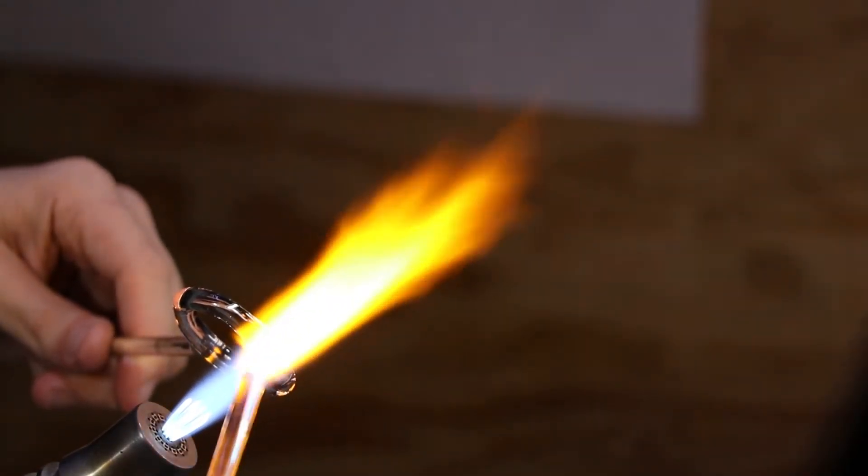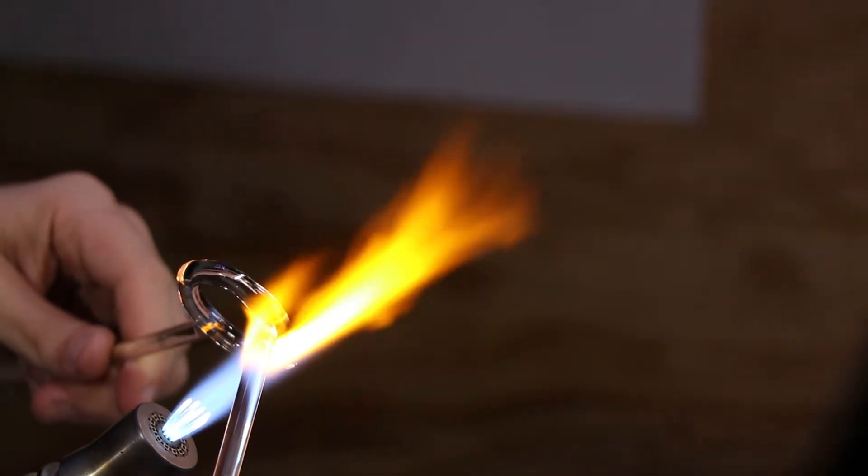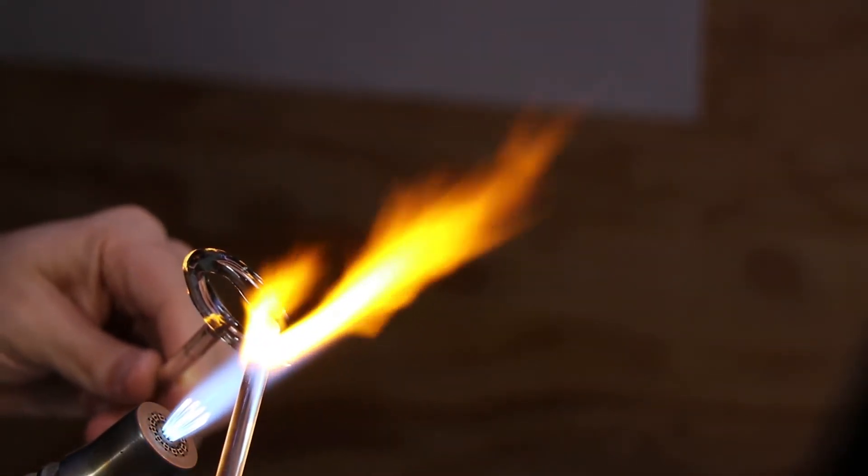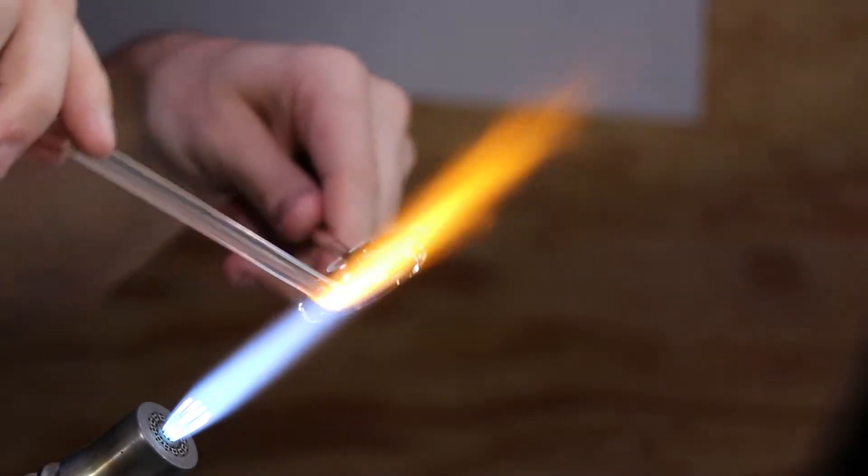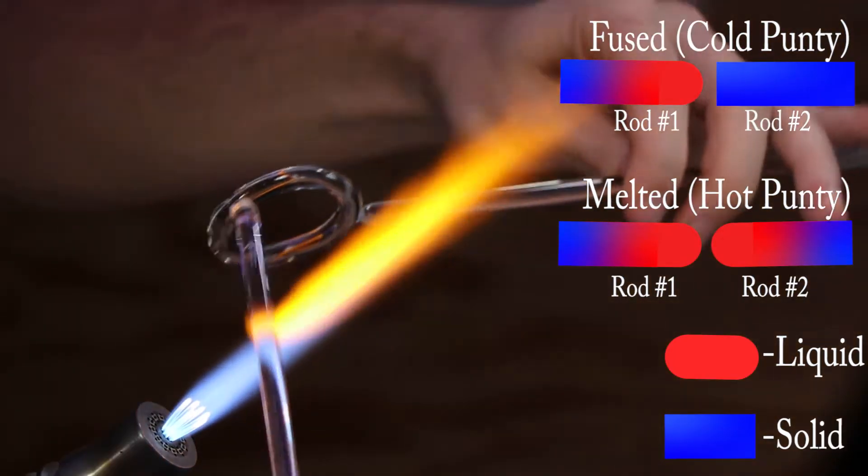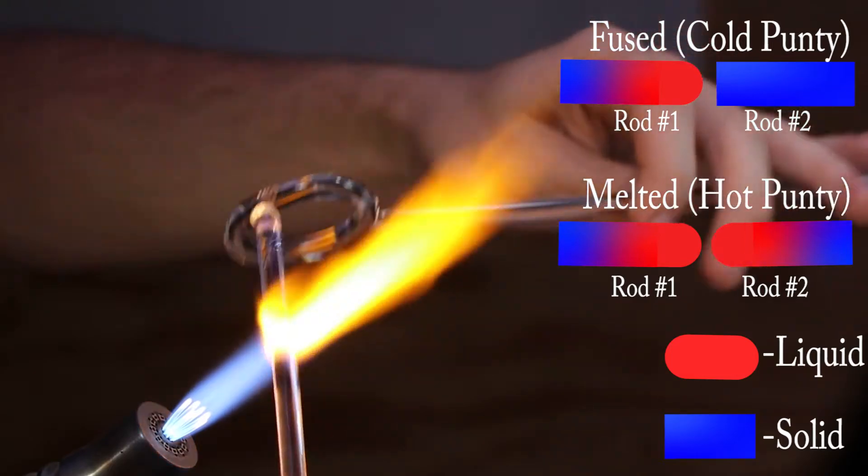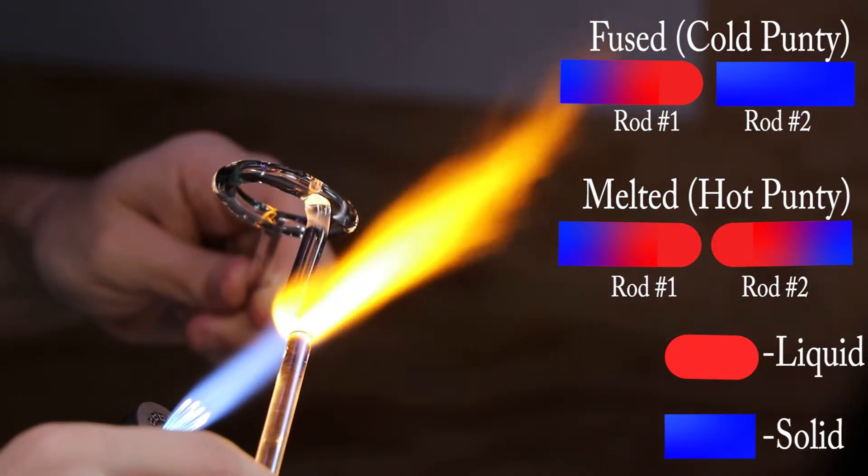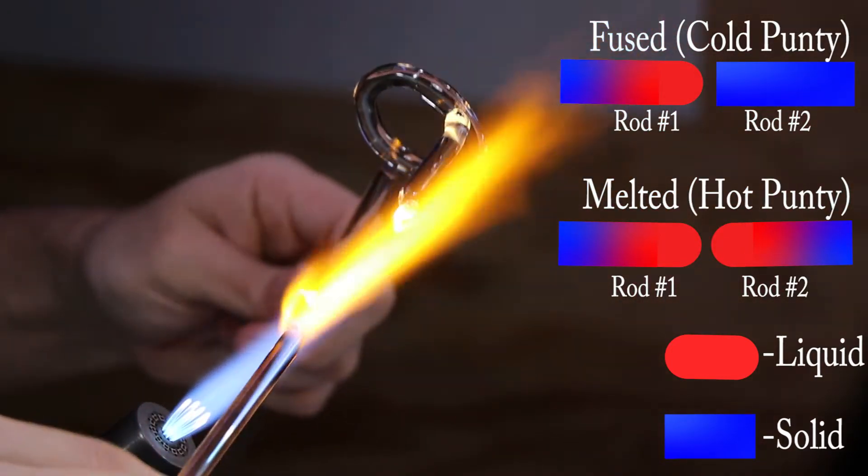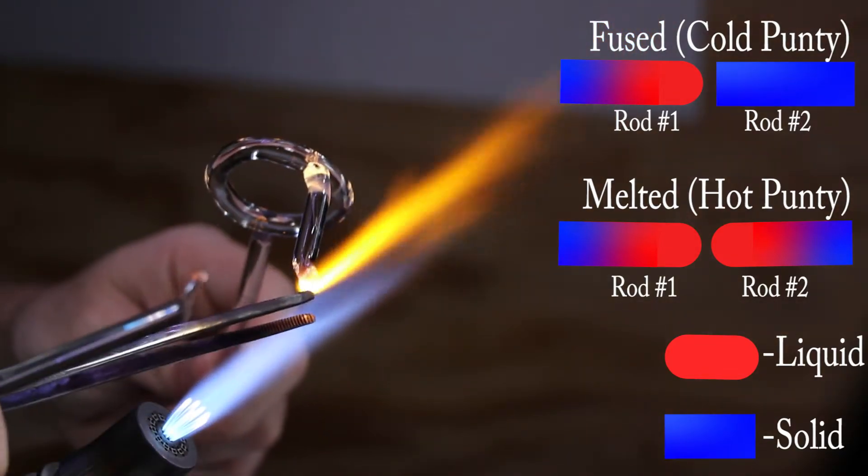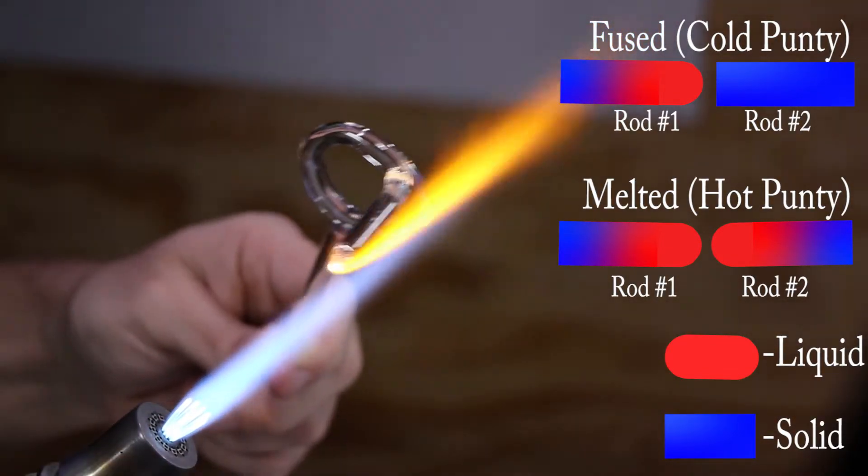When you're attaching like this, you want to heat up both areas very, very hot so they flow together when they touch. When it's too cold, they won't end up melting together but end up fusing together. I kind of like to think of it as one side of the glass is forming to the other side but not the inverse. You want both sides to form together.